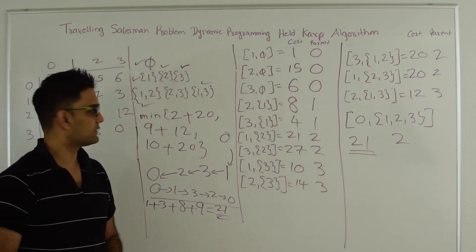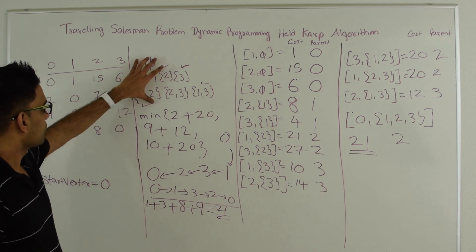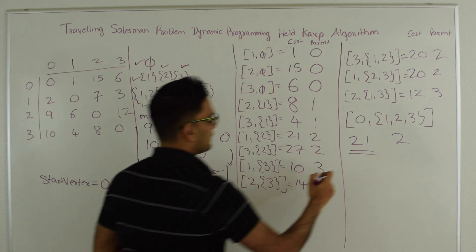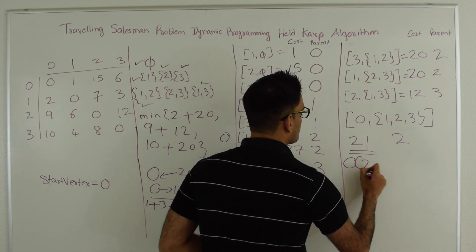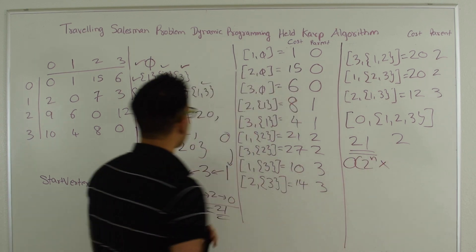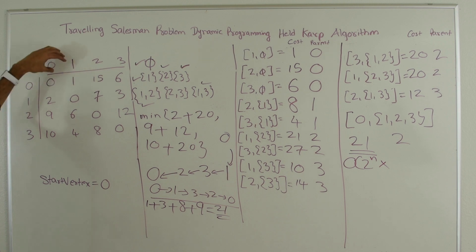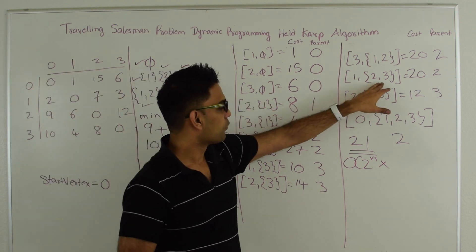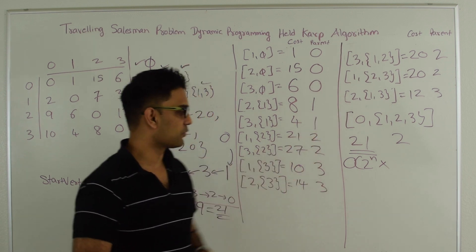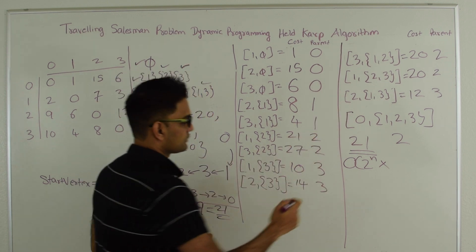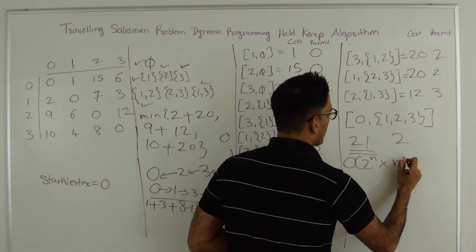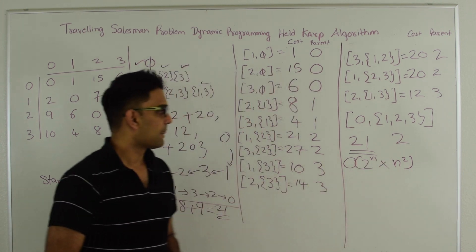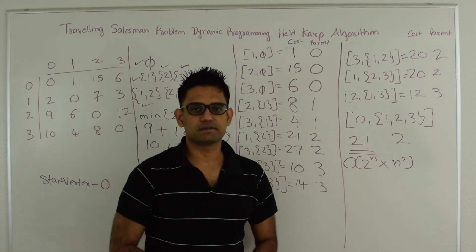The time complexity is exponential. There are O(2^n) subsets, and for each subset we go through every vertex and check what should be the vertex right before it, doing O(n^2) work. So the time complexity is O(2^n × n^2) and the space complexity is also the same.